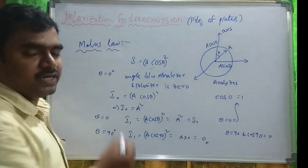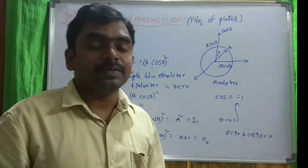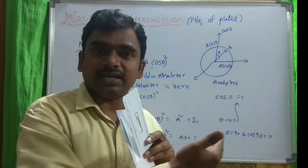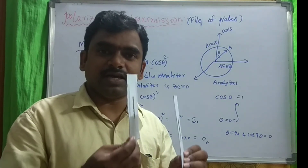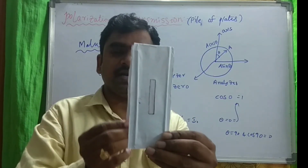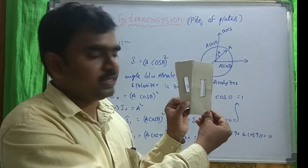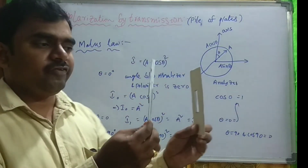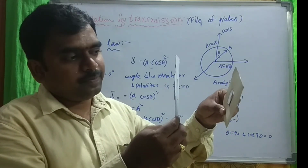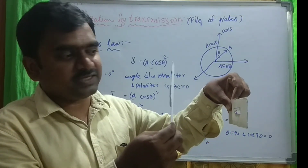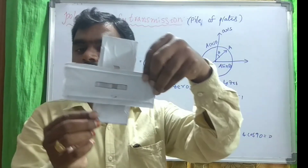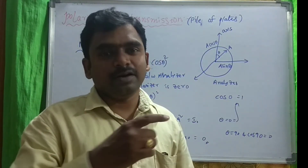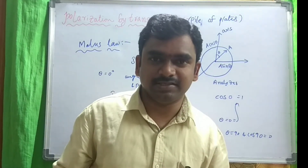This is the concept about Malus's law. Once again, repeating: the intensity of the plane polarized light depends upon the angle between the polarizer and analyzer. If both are parallel, then we can get the same — that is, maximum intensity. If we are rotating the analyzer, the intensity varies. When both are perpendicular, we can't get any intensity — that is, zero. If you understand, please give me a like and share. Thank you for your patience.